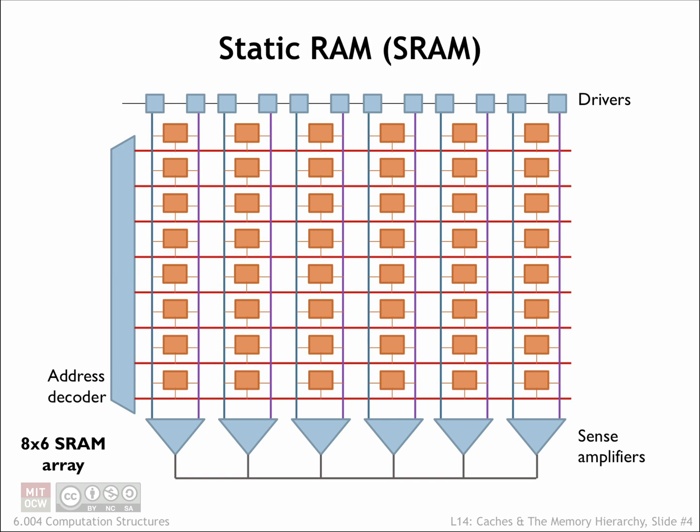You can see that the individual bit cells are organized as 8 rows by 6 columns. The circuitry around the periphery is used to decode addresses and support read and write operations. To access the SRAM we need to provide enough address bits to uniquely specify the location. In this case we need 3 address lines to select one of the 8 memory locations.